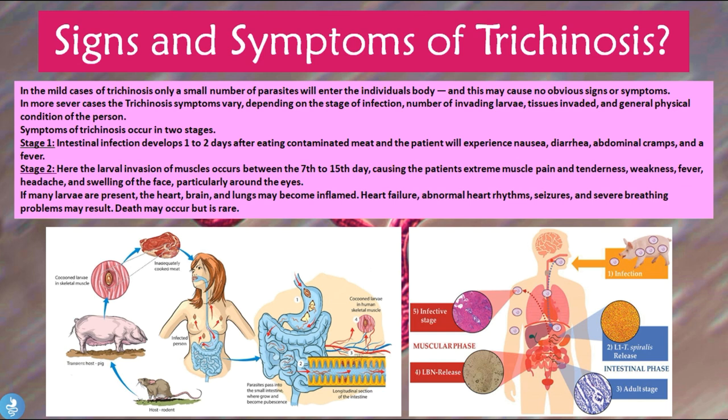In very few severe cases where many larvae are present, the heart, brain, and lungs may become inflamed as well. Heart failure, abnormal heart rhythms, seizures, and severe breathing problems may result. Death may occur but is usually very rare.